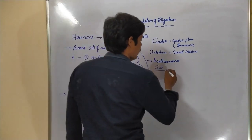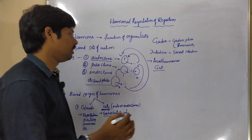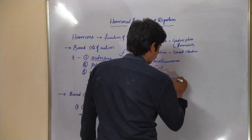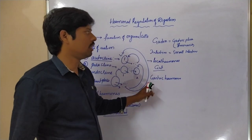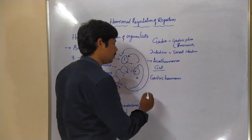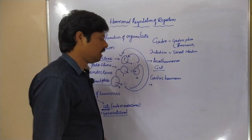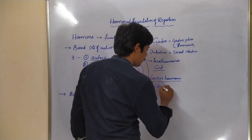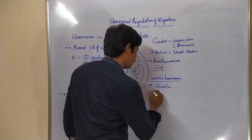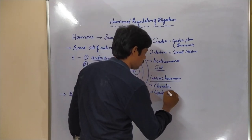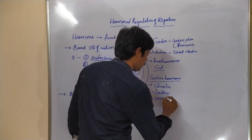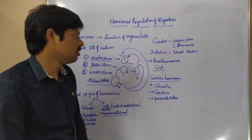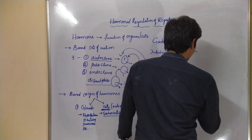Let us see how many types of hormones they are producing. The gastric hormones — produced by the stomach — include ghrelin, gastrin, and somatostatin.